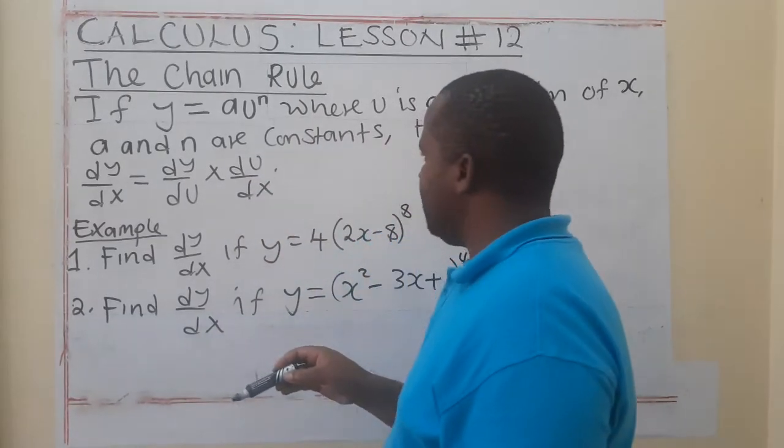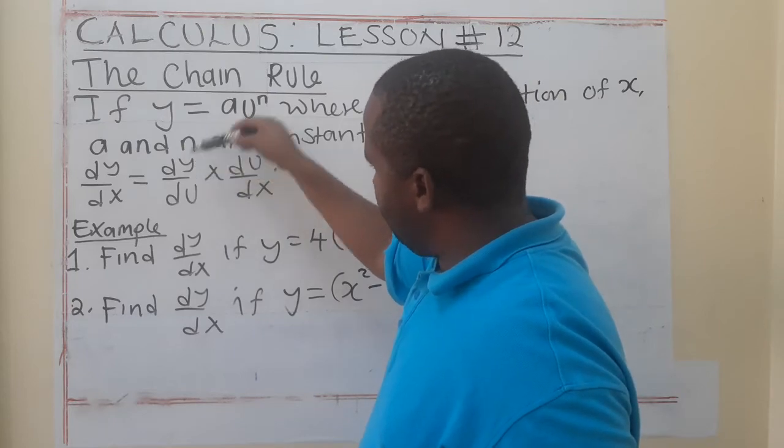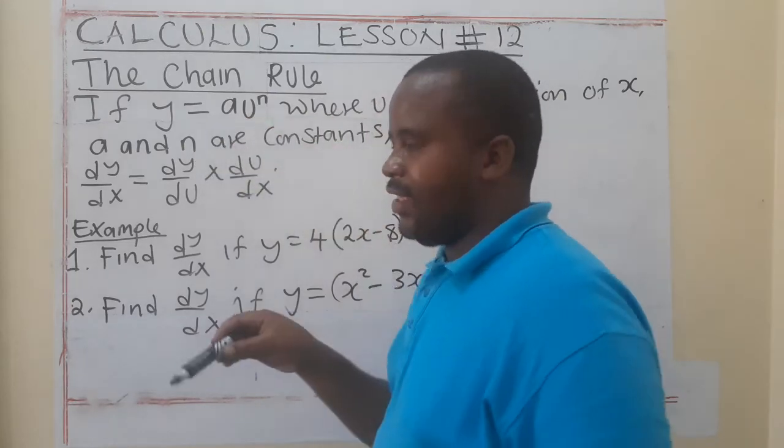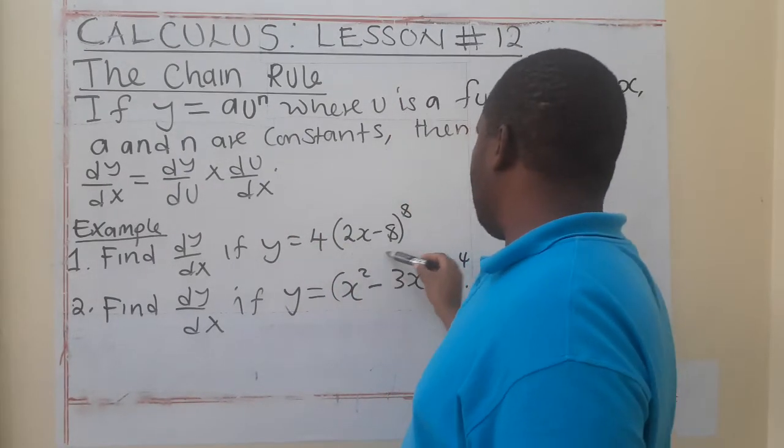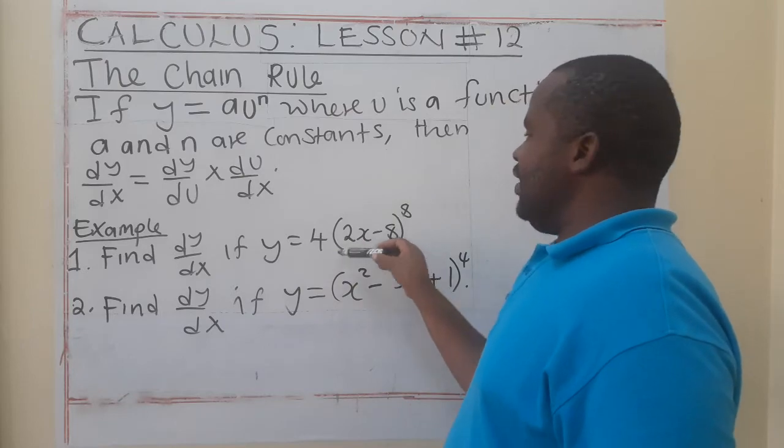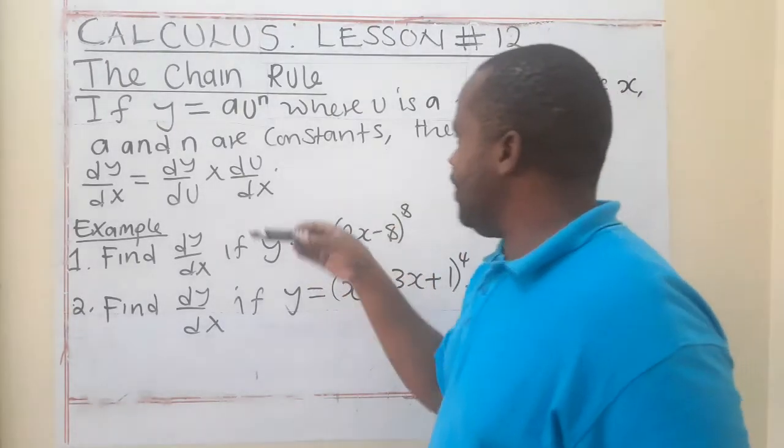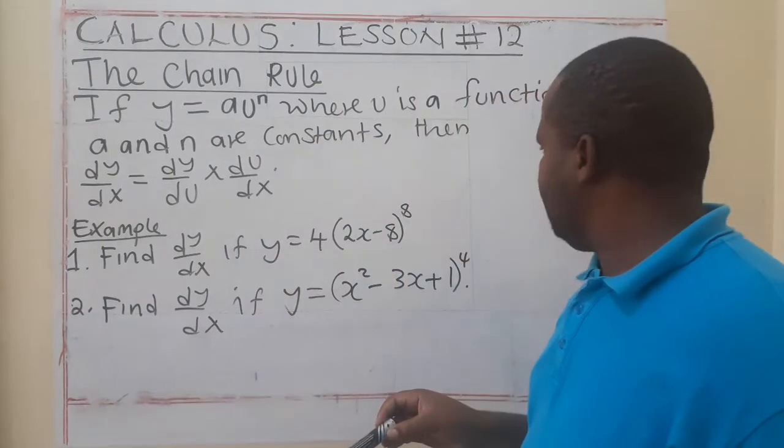So, dy/du multiplied by du/dx simply means that the function that has been given, like this one, you make it to be u. So, you have to differentiate y with respect to u. Then, since it is u and it has x, you differentiate u with respect to x.